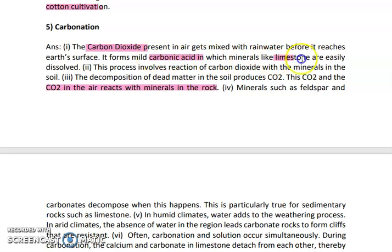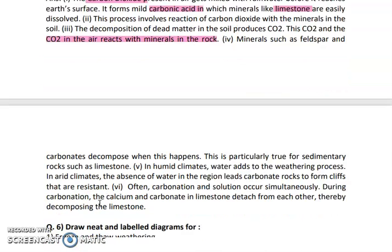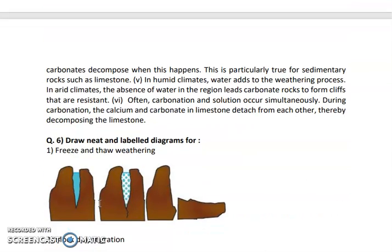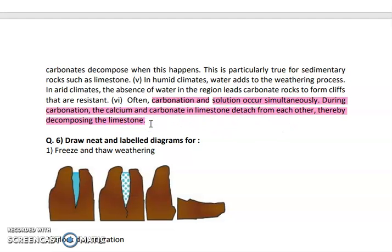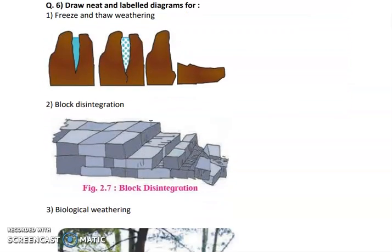Minerals like limestone start reacting, leading to the carbonation process. Often carbonation and solution occur simultaneously because in carbonation the calcium and carbonate in limestone detach from each other, causing the limestone to decompose. Limestone and dolomite are examples of sedimentary rocks which easily react with carbon dioxide.